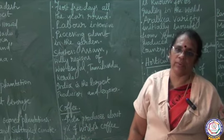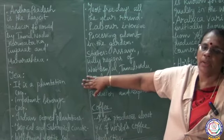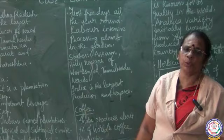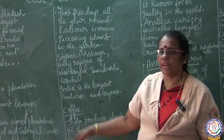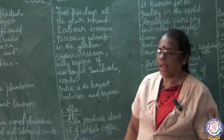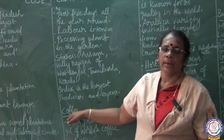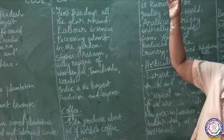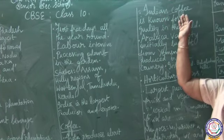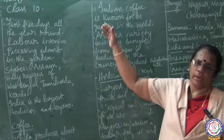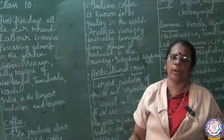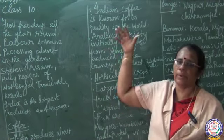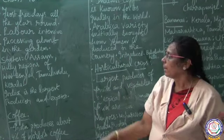To recap tea cultivation: tea is a plantation and beverage crop requiring tropical and subtropical climate, well-drained fertile soil, frost-free days all year, and a large agricultural labour force. There is a processing plant in the tea garden. Tea was initially introduced by the British, but now many Indians own tea estates.